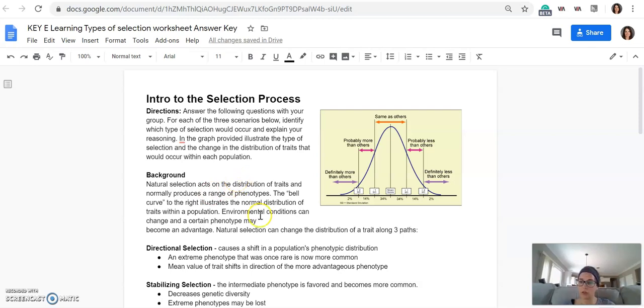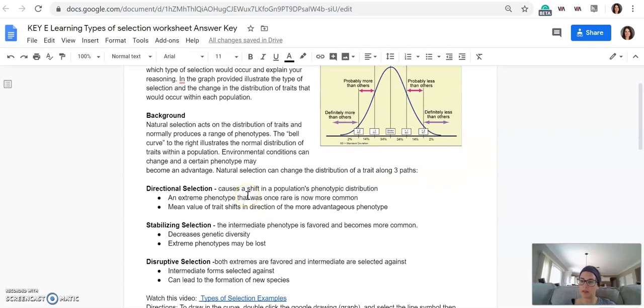There is directional, and it's called directional because it moves in one direction or the other. You may have noticed that the traits that we're looking at, there's always a range. So there's light and dark, or small to large. And so the directional selection, the population shifts into either one direction or the other. So one extreme or the other.